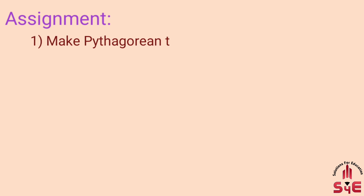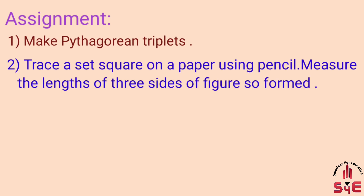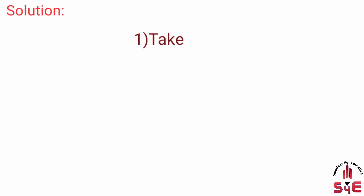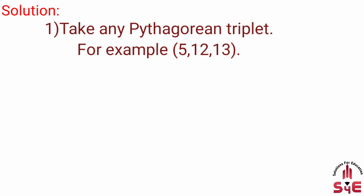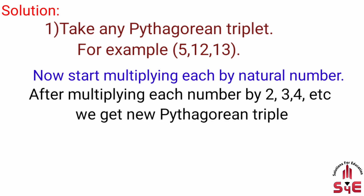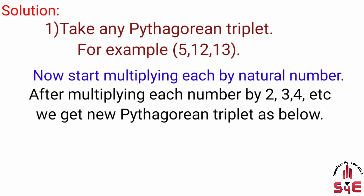Assignment Q1: Make Pythagorean triplets. Take any Pythagorean triplet, for example 5, 12, 13. कोई भी Pythagorean triplet लीजिए और हर number को natural numbers से multiply करते जाइए। For example, after multiplying each number by 2, 3, 4 etc., we get new Pythagorean triplets. अगर हम 5, 12, 13 को natural numbers 2, फिर 3, फिर 4 वगैरा से multiply करते हैं तो नए Pythagorean triplets हासिल होते हैं।